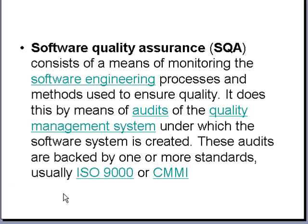Software quality assurance consists of a means of monitoring the software engineering processes and methods used to ensure quality. It does this by audits of the quality management system. This quality management system is what is audited — these standardized norms are used to check the quality management system. If you have institutionalized knowledge, that means you have a sound quality management system. There are many other key process areas like this that auditors check.